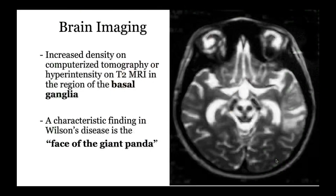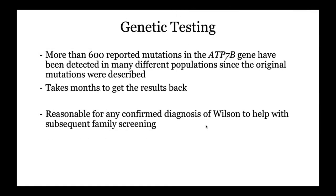On MRI of the brain, there is increased basal ganglia hyperintensity. A characteristic finding on a specific brain section is called the 'face of the giant panda' sign. Genetic testing for the ATP7B gene involves more than 600 important mutations, takes months to come back, and is really only reasonable for screening first-degree relatives. If you have an actual diagnosis, you might do genetic counseling and genetic testing.